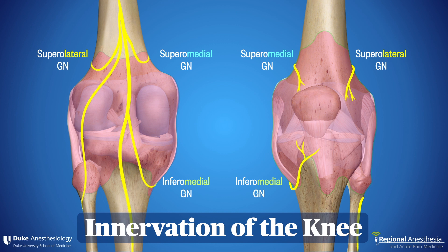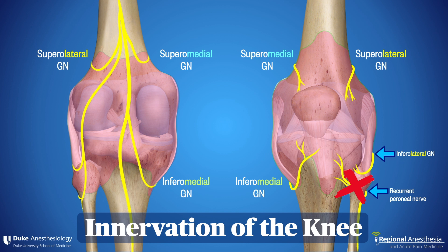Now, there are other nerves that innervate the joint capsule. For example, the inferior lateral genicular nerve and the recurrent peroneal nerve both supply the inferior lateral joint structures, but we typically don't target these because of the risk of inadvertently blocking the common peroneal nerve.